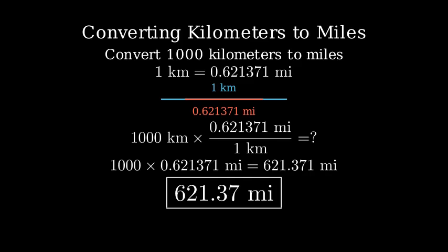Rounding to two decimal places, we get 621.37 miles. And that's how we convert kilometers to miles using dimensional analysis.